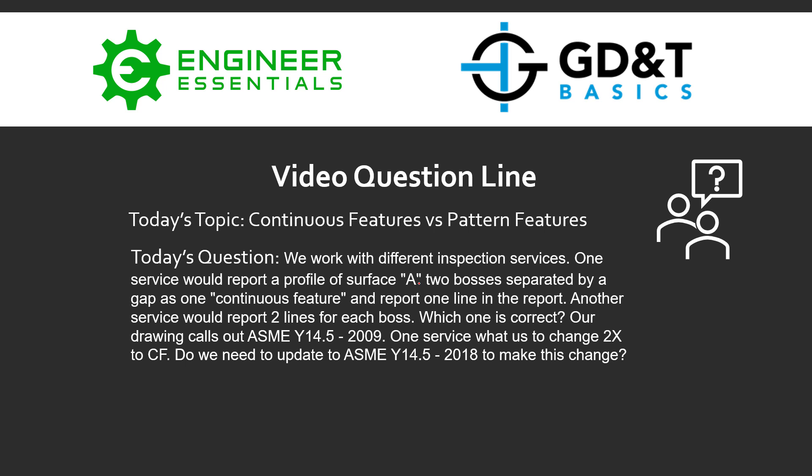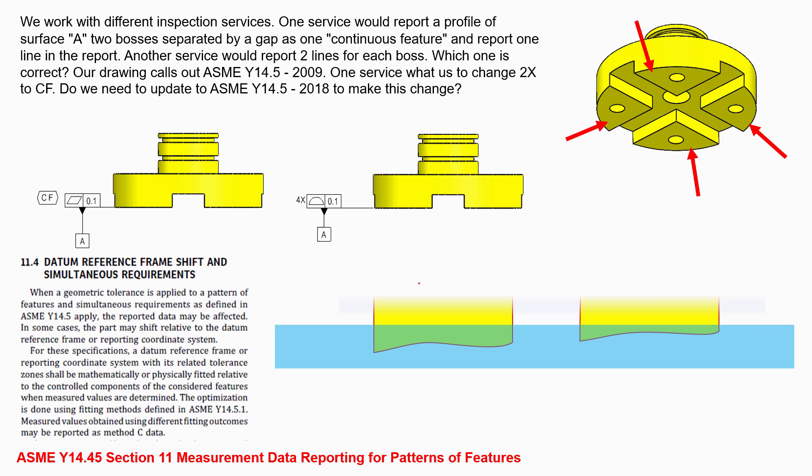Hey everybody, Jason here again with the GD&T Basics video question line. Today's topic is continuous features versus patterns of features. The question is: we work with different inspection services, and one service would report a profile of a surface for surface A — which is two bosses separated by a gap — as one continuous feature and report one line item. Another service would report two lines for each boss. Which one is correct? We'll pull up an example that shows the continuous feature compared to a pattern of surfaces that creates just one inspection.